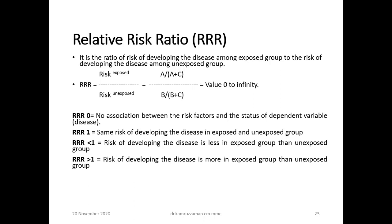If the relative risk ratio is one, there is the same risk of developing disease in both the exposed and unexposed groups. If it is less than one, the risk of developing disease is less in the exposed group than the unexposed group. If it is more than one, the risk of developing disease is greater in the exposed group.